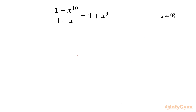Welcome back to Infigyan friends. In this video we are going to take up another interesting challenging question from algebra. The equation is (1 - x^10) / (1 - x) = 1 + x^9, and we have to find out all real solutions.